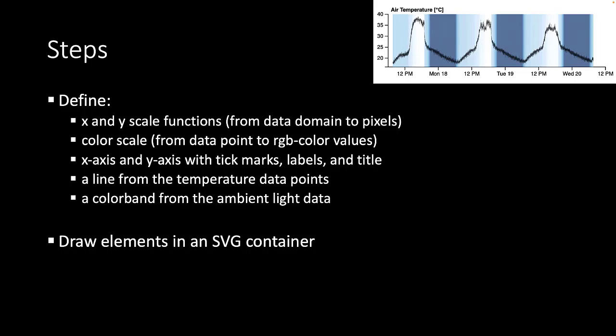First, we define again an X and Y scale functions to get from the data domain to the pixel domain. Then we also need to define a color scale to go from the data domain, which is in this case the ambient light conditions, to RGB color values, which will be used for the color band. We define an X axis and Y axis with proper tick marks and labels.